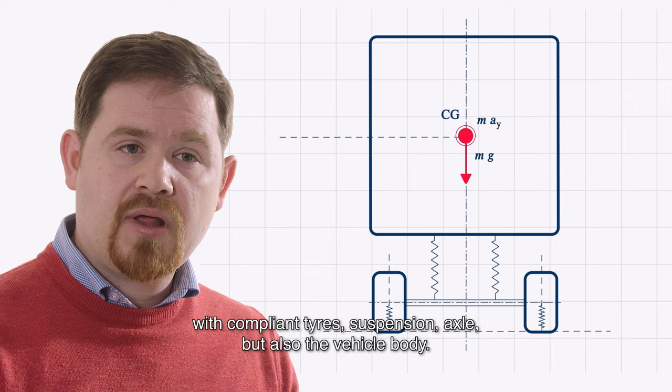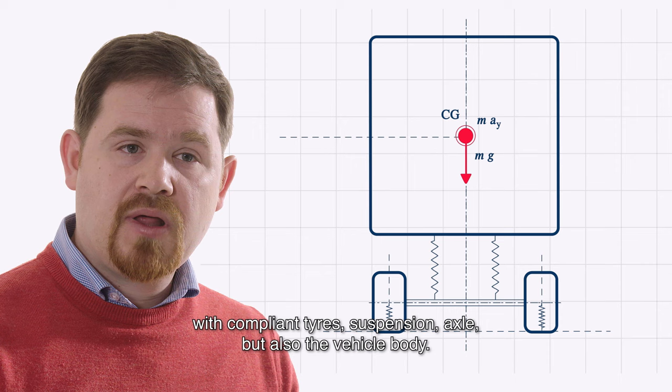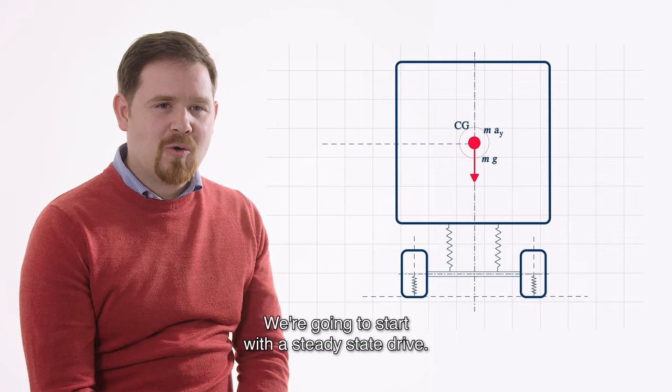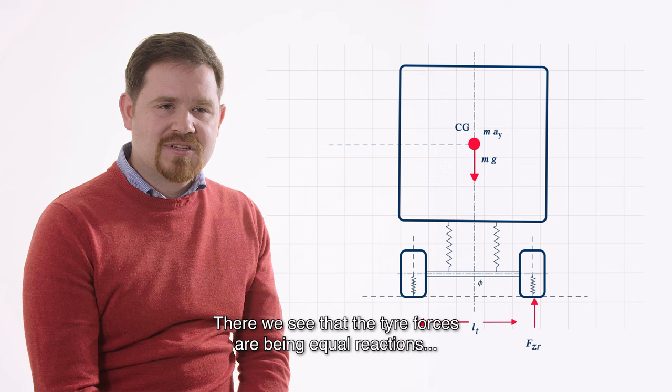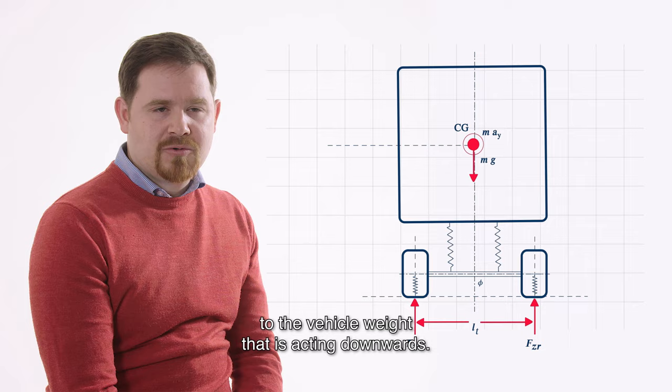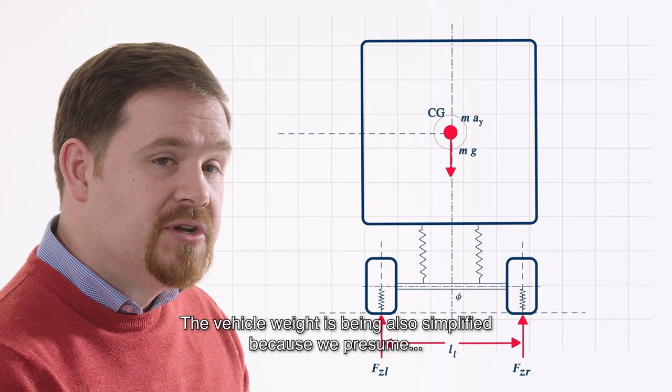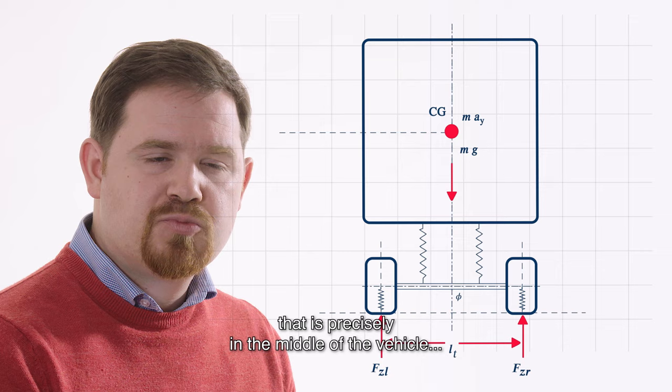We're gonna see the frontal view of the vehicle with the compliant tires, suspension, axle, but also vehicle body. We're gonna start with a steady state drive. There we see that the tire forces are being equal reactions to the vehicle weight that is acting downwards. The vehicle weight is also simplified because we presume that all the mass is concentrated into the center of gravity, which is precisely in the middle of the vehicle and at a distance hcg above the ground point.